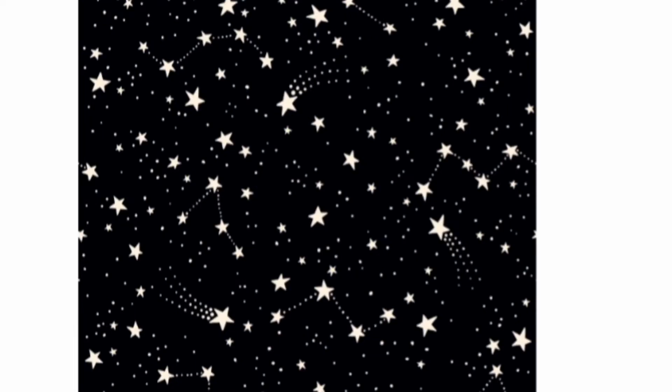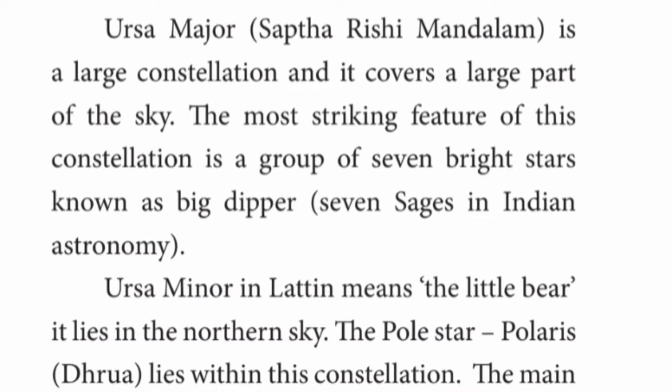Ursa Major, also known as Saptarishi Mandala, is a large constellation and it covers a large part of the sky. The most striking feature of this constellation is the group of seven bright stars known as the Big Dipper. These seven stars are brighter, and it is called the Big Dipper — representing seven sages in Indian Astronomy.